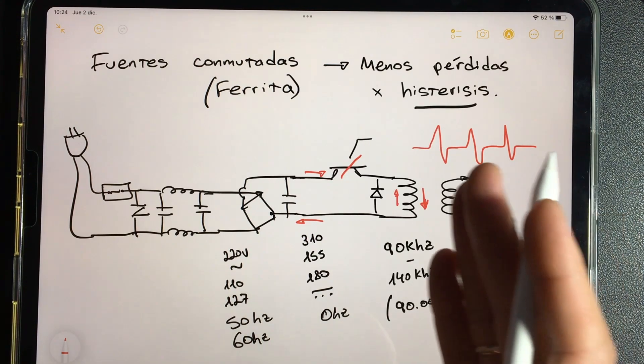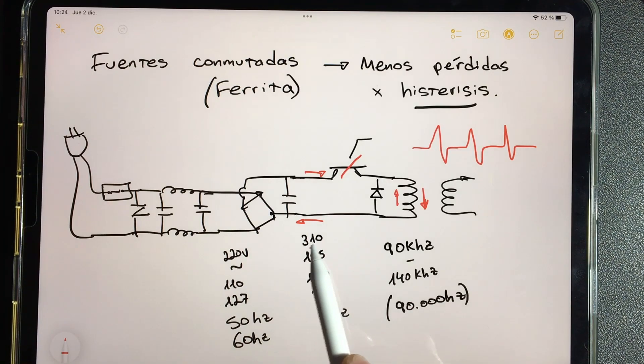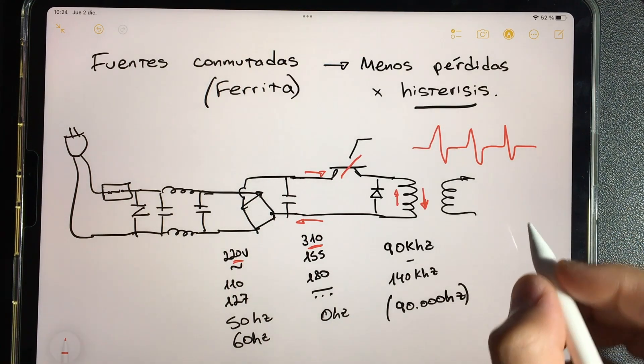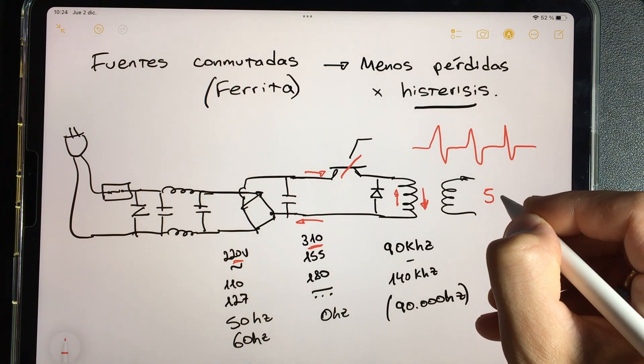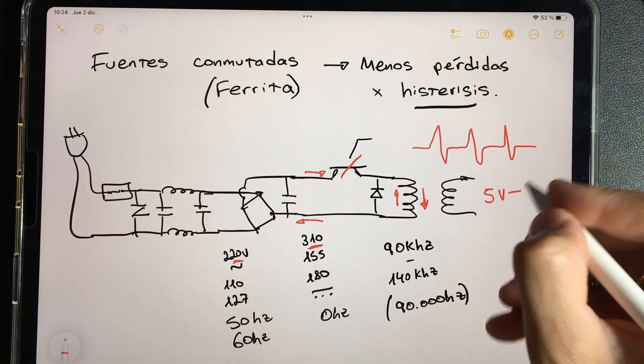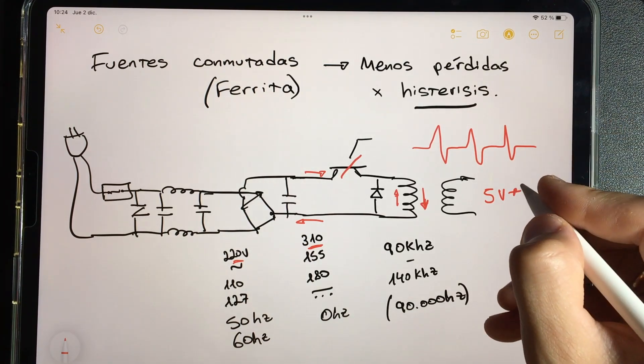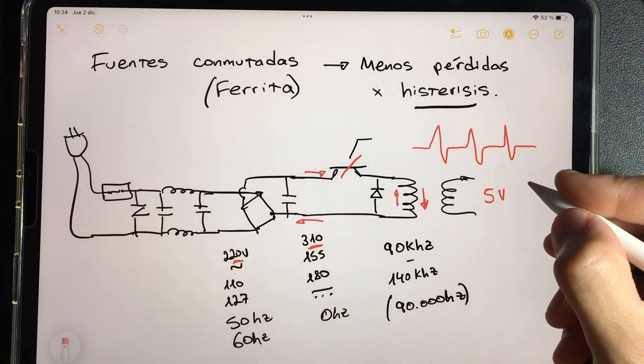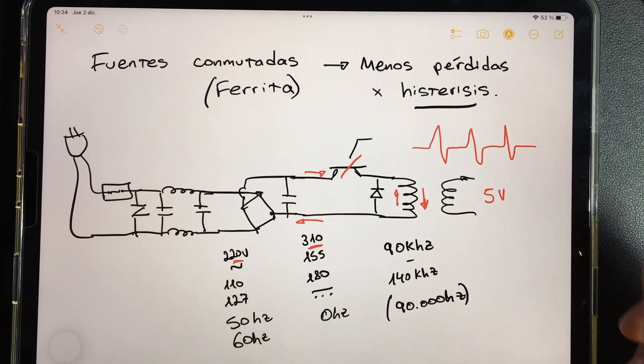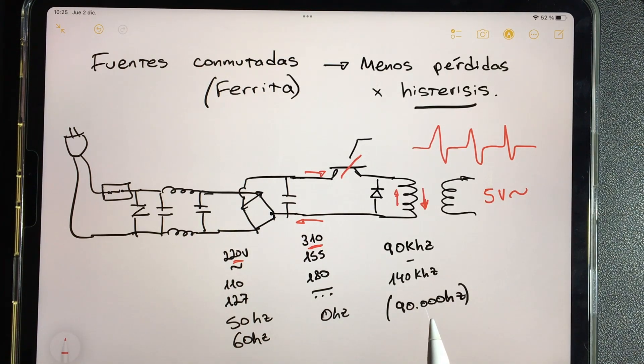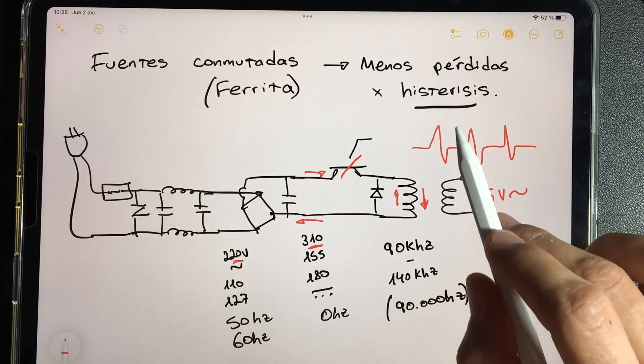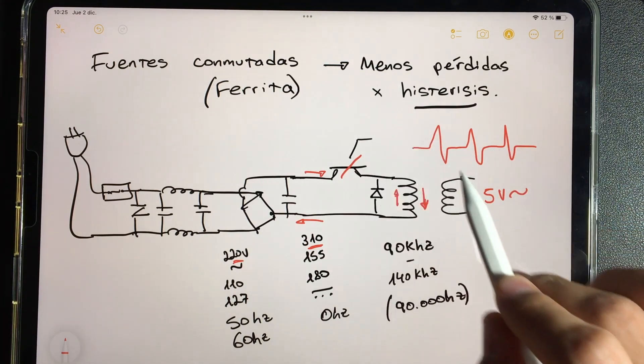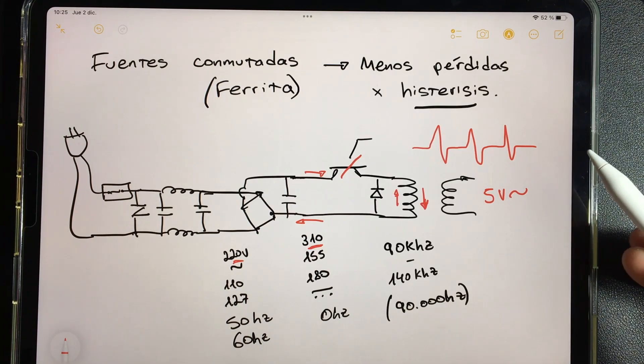And that same thing comes out from the other side, but now with a reduced voltage. On the other side we don't have 310 anymore, but on the other side of this transformer we'll have 5 volts always with a current, always with an alternating current but with a very high frequency, which is no longer sinusoidal and rather square. This alternating current, it no longer has that sinusoidal format, but it doesn't matter, it's the same.